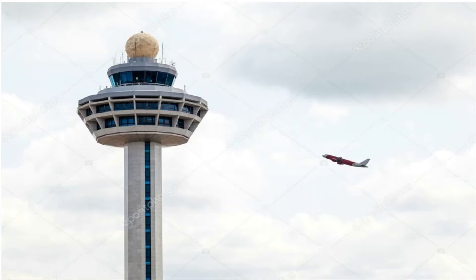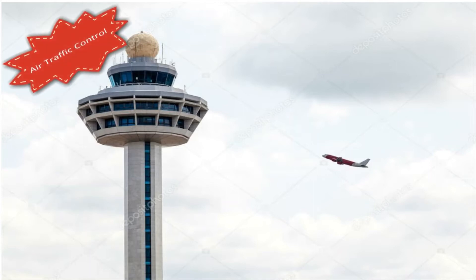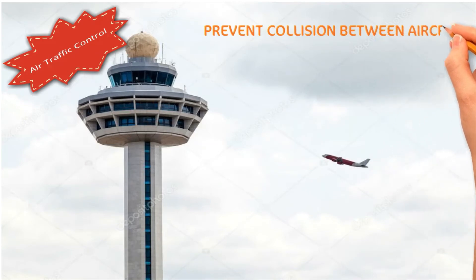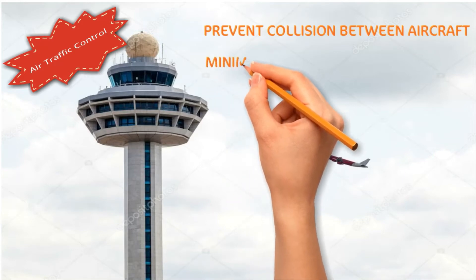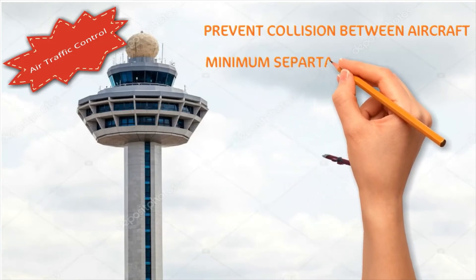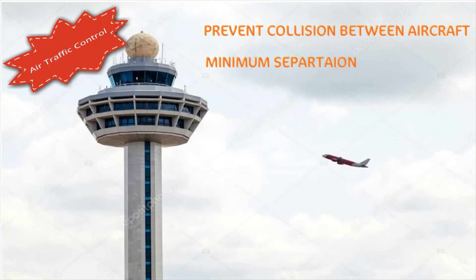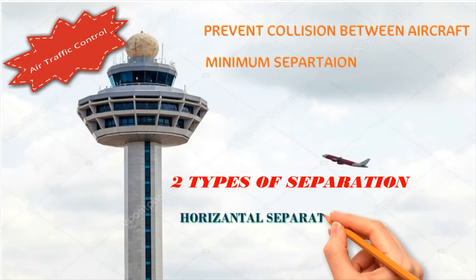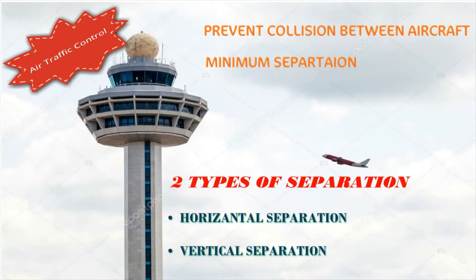Aviation is highly sensitive to safety. One of the primary objectives of an air traffic controller is to prevent collision between aircraft. This objective is achieved by ensuring that there is always a minimum separation between two aircraft. Every aircraft is separated from other aircraft by a set minimum separation. Primarily, there are two types of separations: horizontal separation and vertical separation.